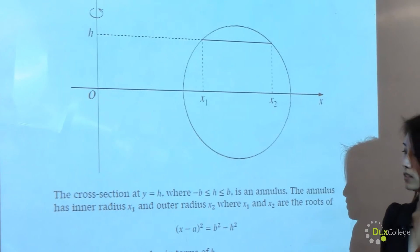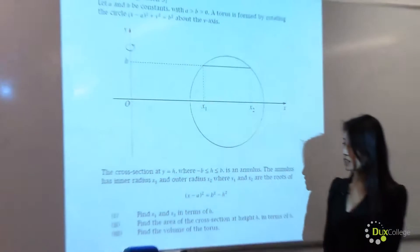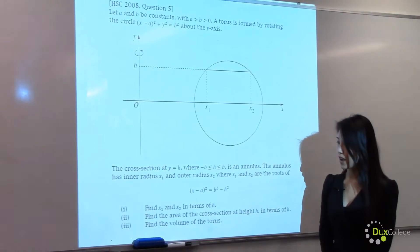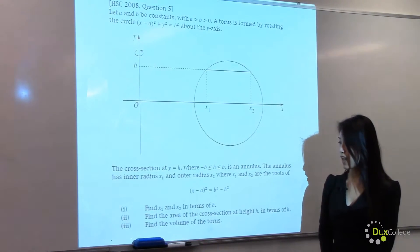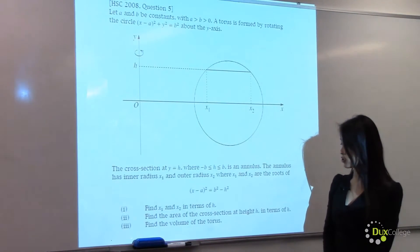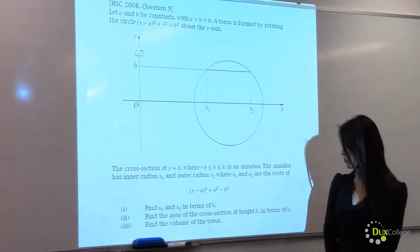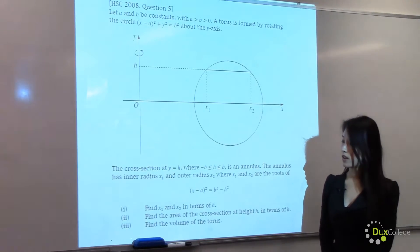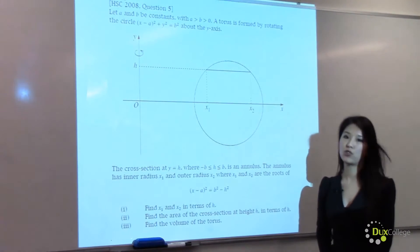Part 1: find x1 and x2 in terms of h. Part 2: find the area of the cross-section at height h in terms of h. Part 3: find the volume of the torus.